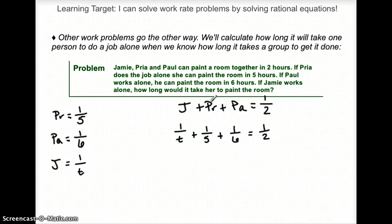I'm going to try to make all of these fractions have 30T on the bottom. Don't forget we have a variable. 30T on the bottom. So this first fraction already has the T, but it's missing the 30. So I'm going to multiply the first one by 30.